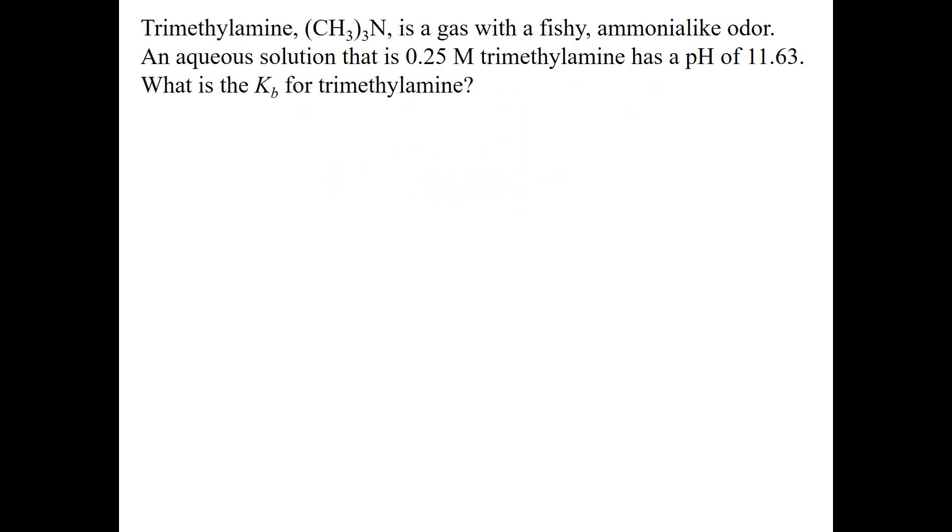The next problem: we are given the initial concentration and given a pH and asked to find Kb. So we have a concentration of (CH3)3N of 0.25 molar. We have a pH of 11.63, and we want to know what the Kb is. So typically in these problems, you're given pH and asked to find Kb, or you're given Kb and asked to find the pH. Same procedure—we're going to write out the balanced reaction.